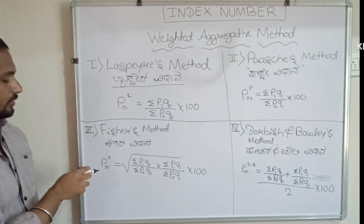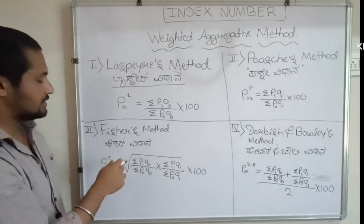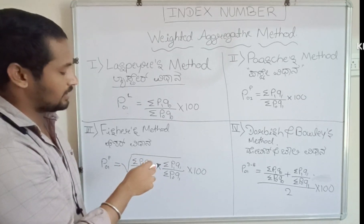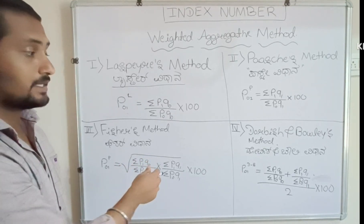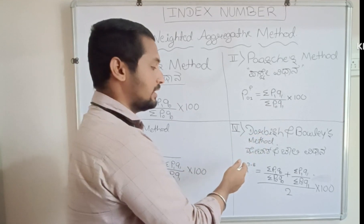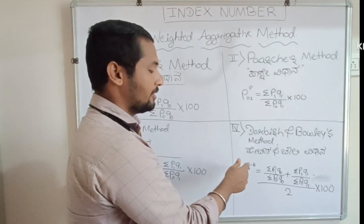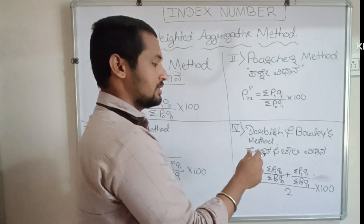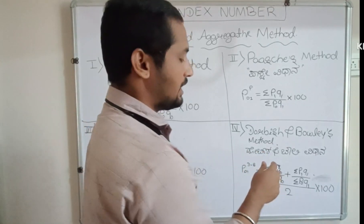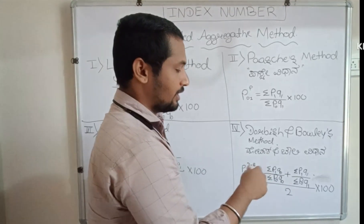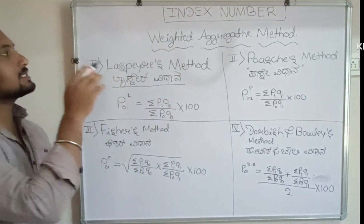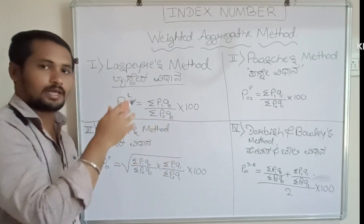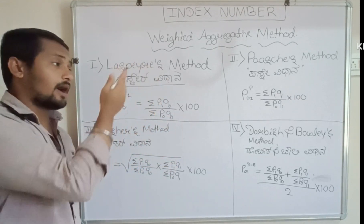Fisher's formula: F equals root of sigma p1 q0 divided by sigma p0 q0, into sigma p1 q1 divided by sigma p0 q1, into 100. Dorbish and Bowley's method: p0 1db equals sigma p1 q0 divided by sigma p0 q0 plus sigma p1 q1 divided by sigma p0 q1, divided by 2, into 100. Index number — weighted aggregative method — these 4 methods.